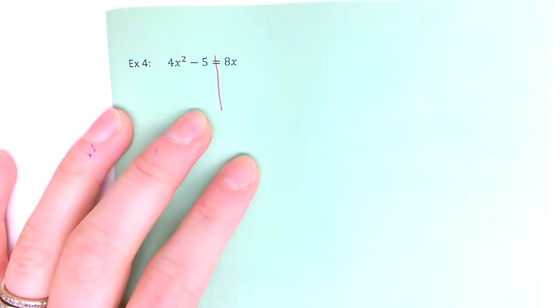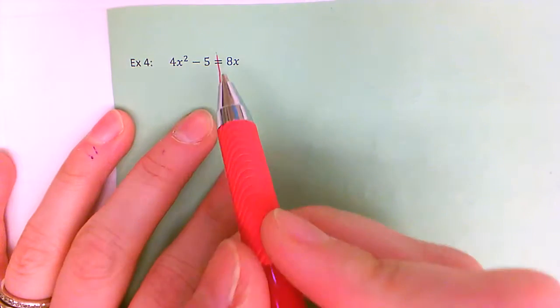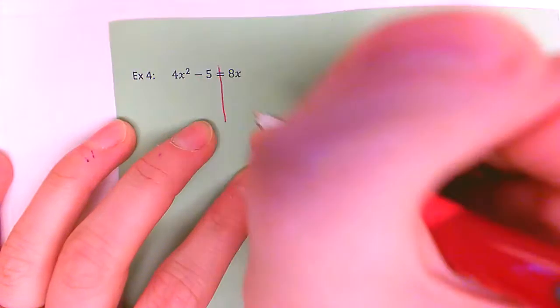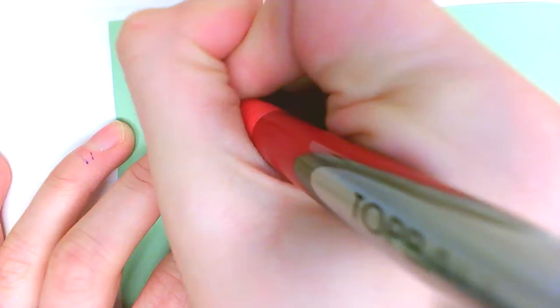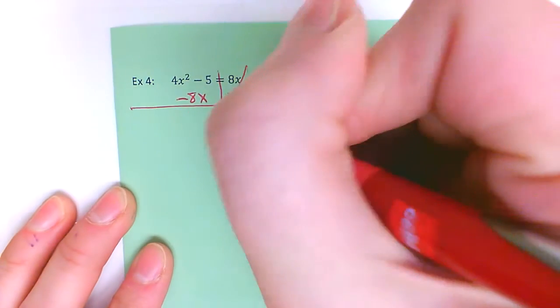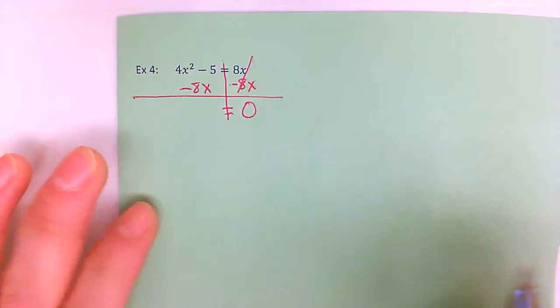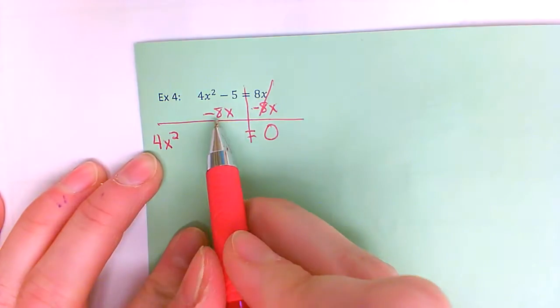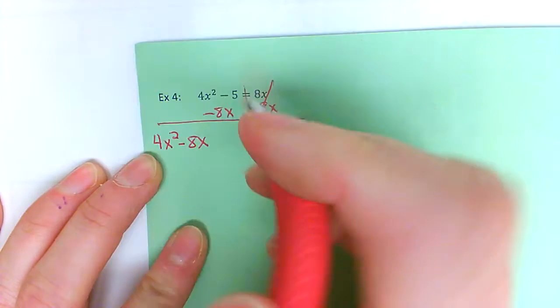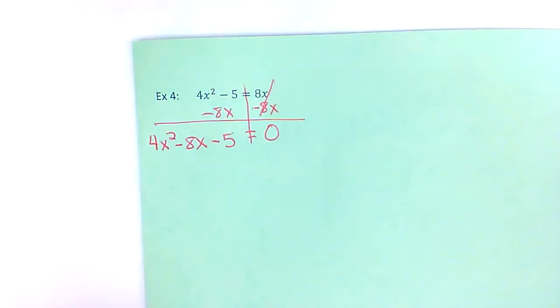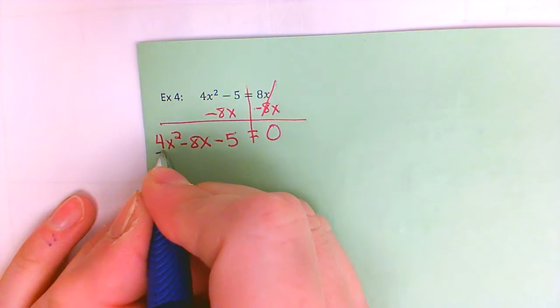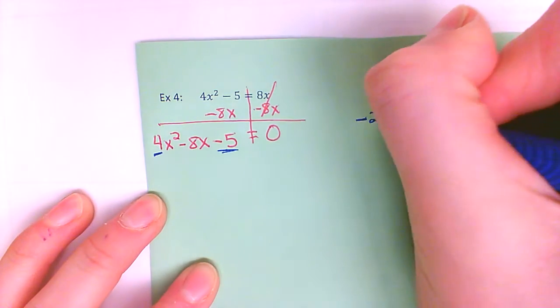Last example. Before I can do anything else, I've got to get an equals zero. The opposite of a positive eight x is to subtract eight x from each side — it cancels out on the right and gives me the equals zero that I want. On the left side I need to make sure I put it in standard form: four x squared goes first, then the regular term with the x, then the constant at the end. This is another problem where I have a number in front of the x squared, so I've got to do four times negative five, which gives me negative twenty.